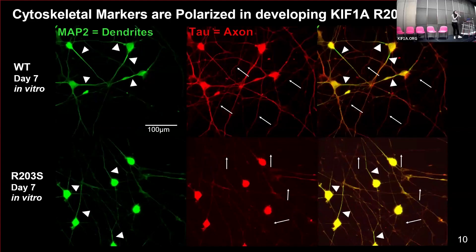We looked at a series of immunocytochemical staining using the markers MAP2 for dendrites and Tau for axons. At the top we have the wild type, at the bottom are the patient variant cells, and on the very right is an overlay of those two images in green and red. Hopefully you can see the polarity I was talking about — there are areas of just green and areas of just red — showing that these markers are being differentially distributed throughout the cell, allowing for the differential maturation of these cell components.